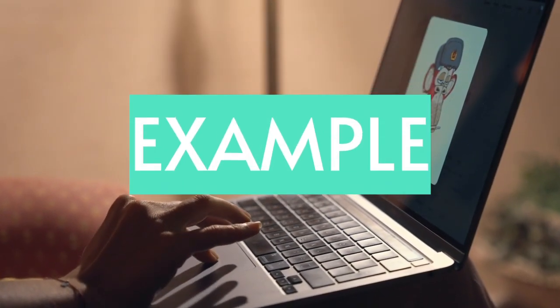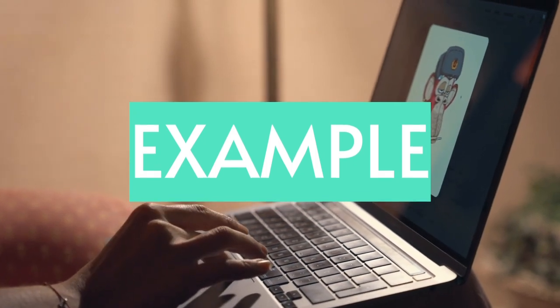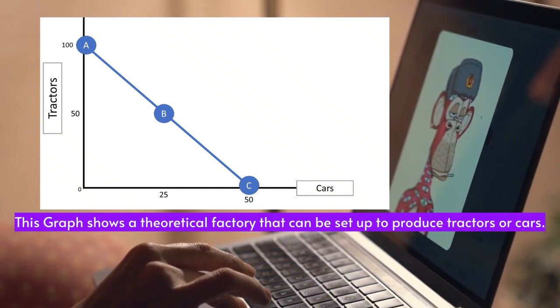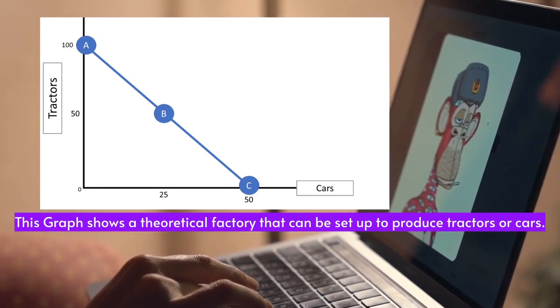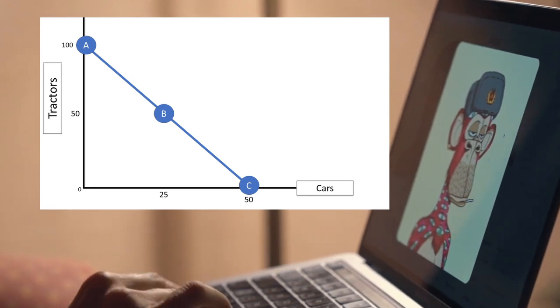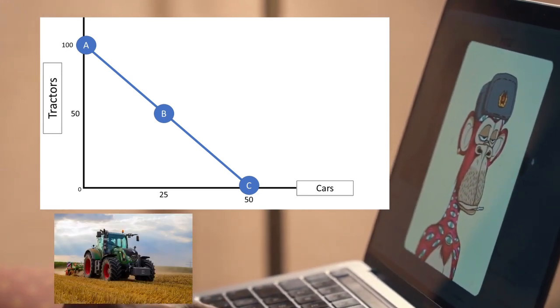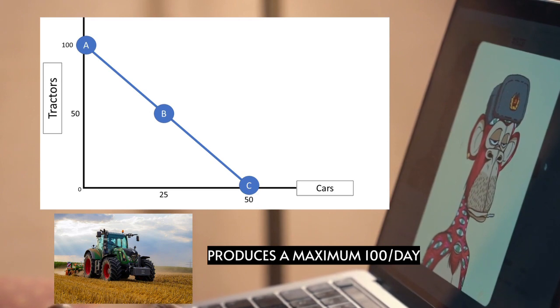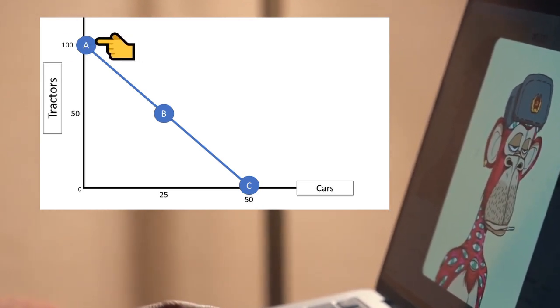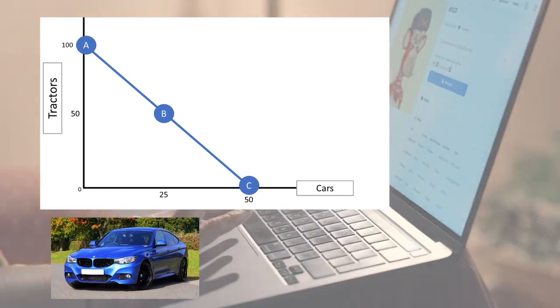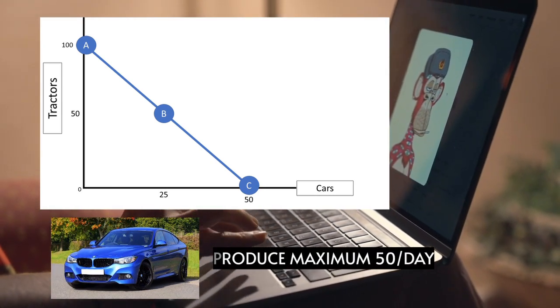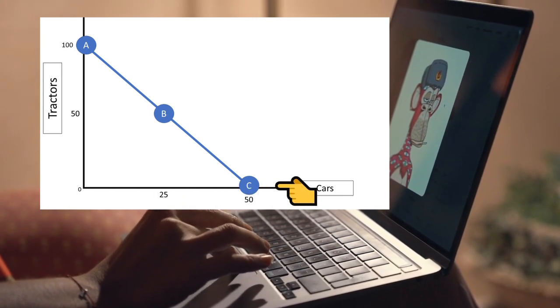To make it clear, let's look at this one example. This chart shows a factory that can be set up to produce tractors or cars. If it produces only tractors, it can produce a maximum of 100 per day at point A on the chart. If it produces only cars, it can produce a maximum of 50 per day at point C on the chart.